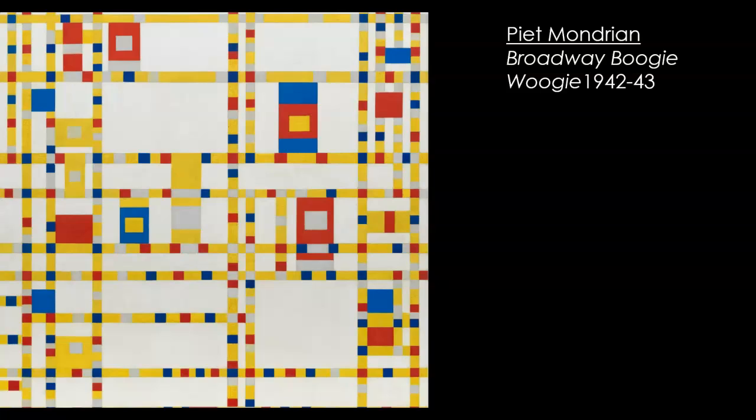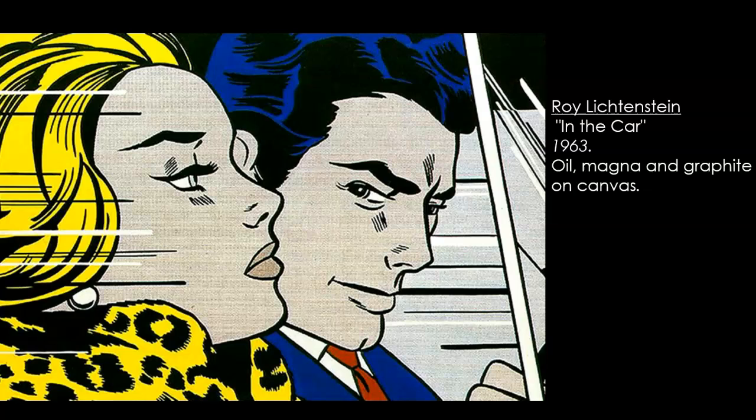Here's a composition created using high intensity primary colors by Piet Mondrian. And another composition of high intensity primary colors by Roy Lichtenstein — red, yellow, and blue.